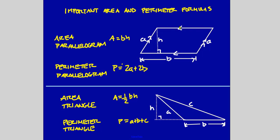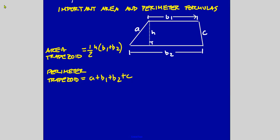For a triangle: the perimeter is a plus b plus c. Unless it's a right triangle, side 'c' is not the same as the height — the height is the altitude. If I drop a rope from the top, it falls outside the triangle and intersects the ground at a 90-degree angle. This is the base and this is the height. The area of a triangle is one half base times height.